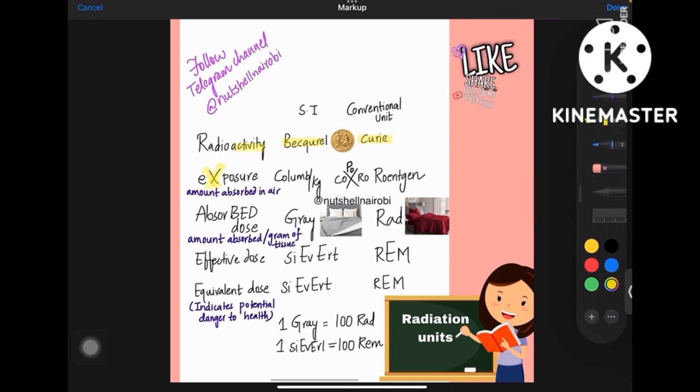Coming to exposure, remember it like X here, so the symbol X with C O and R O adjacent. C O is coulomb and R O is roentgen. So exposure has coulomb per kg in SI and roentgen in conventional unit.